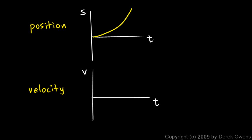Velocity is the derivative of position, so what we're going to be doing down here is making a graph based on the slope of this graph. We want the value of our v graph at any moment in time to be the slope of the position graph at that moment in time. Here at these low values for t, the slope is really small — in fact, it's zero right there, the parabola gets flat. And then as time goes on, the slope gets steeper and steeper.